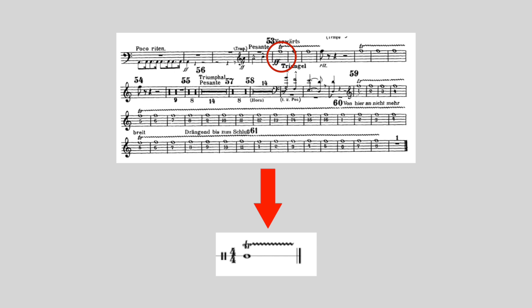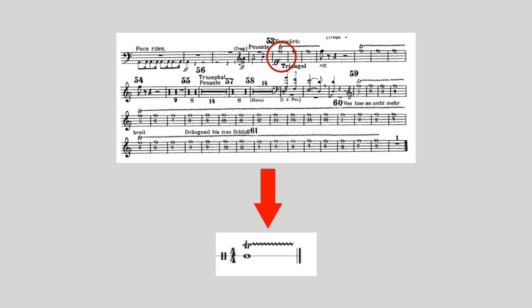In this moment, we have something in our part called a trill, which is basically a drum roll, but on the triangle. When we hit the triangle, it rings for a long time on its own. But when a composer wants the sound to sustain for even longer, this is what they write. To play this on a triangle, you once again have to use your triangle upstroke technique to bounce the beater back and forth in the corner.